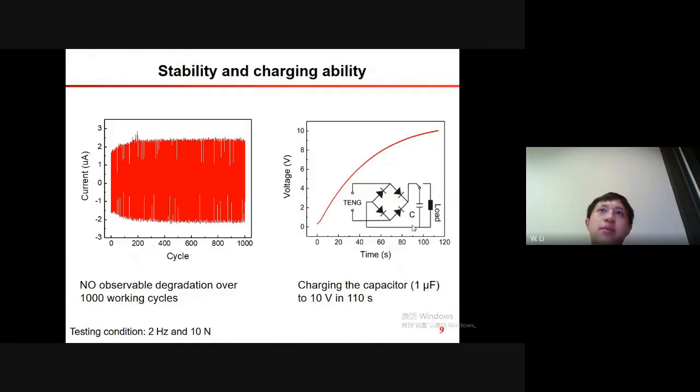Our devices showed an excellent stability in its output. As you can see, there is no observable degradation in the output over 1,000 working cycles. With the high performance and stable output, the energy harvested by the NF-TENG can be stored in capacitors or batteries. The NF-TENG can charge the capacitors to 10 volts in just 110 seconds.